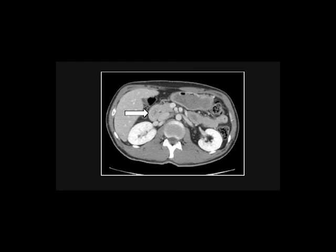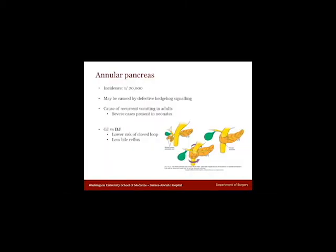Note the proximal dilated stomach. Annular pancreas is a relatively rare abnormality and a cause of recurrent vomiting in adults. It is an embryological abnormality caused by defective migration of the ventral pancreatic bud, which then envelops the second part of the duodenum.